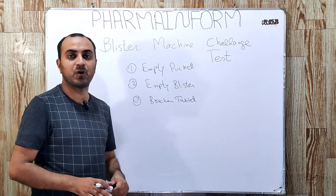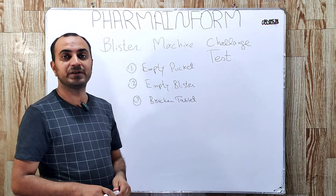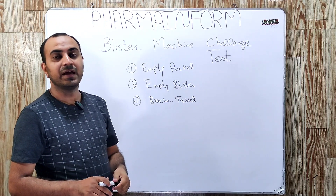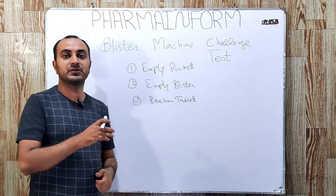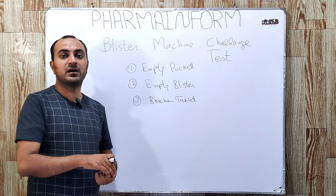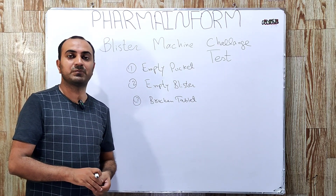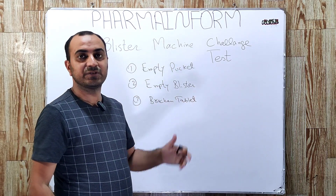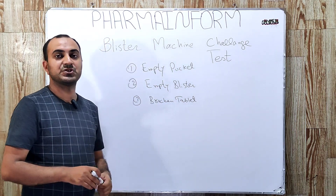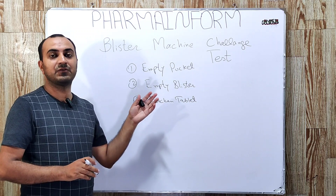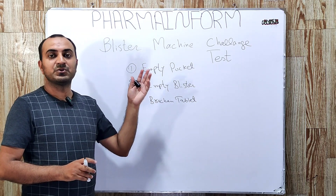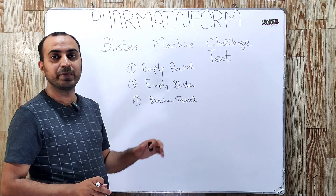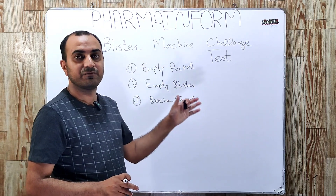How is this challenge test performed? In this test, we deliberately leave one pocket empty and pass this blister through the inspection camera of the blister machine. If this blister is rejected by the machine, it means that our machine is working properly and its inspection system is working very well.